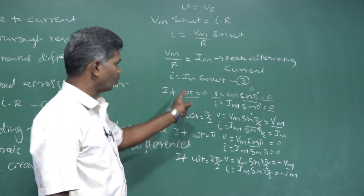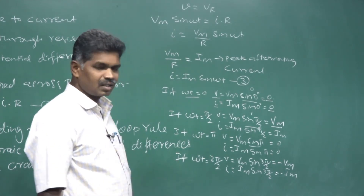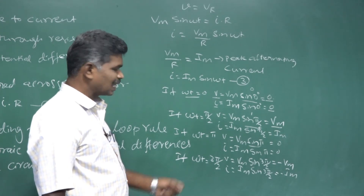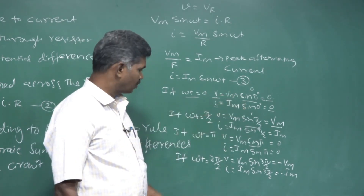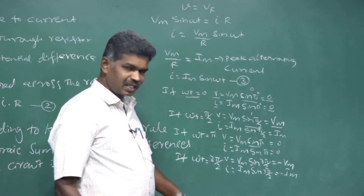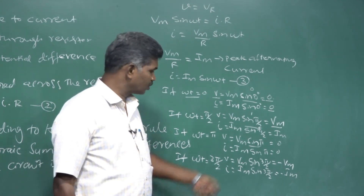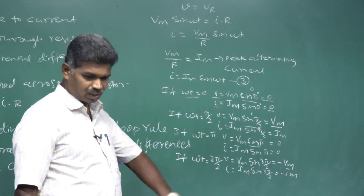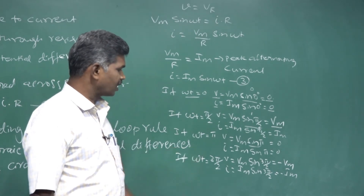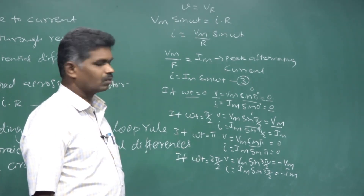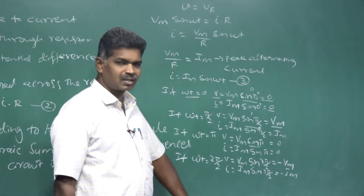Summary of substitutions: At ωt = 0, both instantaneous voltage and current are zero. At ωt = π/2, both potential difference and current are maximum. When ωt = π, both are zero again. At ωt = 3π/2, V = -VM and I = -IM, negative peak values.